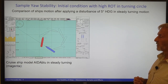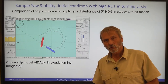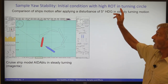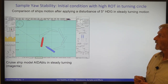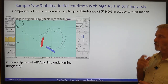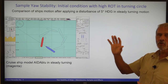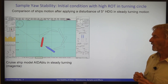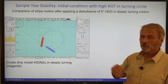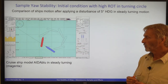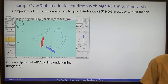To give a sample of yaw stability, I will start first with turning motion, specifically where we have a relatively high turning rate and then we want to apply a disturbance — for instance, a 5-degree heading change like a push from a wind gust or a wave. I will use the cruise ship model AIDA Blue in my fast time simulation tool in steady state turning, so I have to change now to the fast time simulation mode.